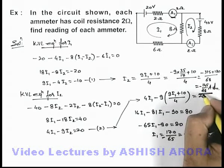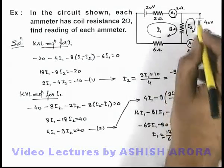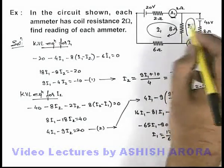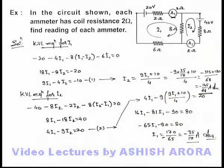Again here I'm getting the result negative, which implies the current i2 is flowing in an anti-clockwise manner, but I had taken i2 to be clockwise.